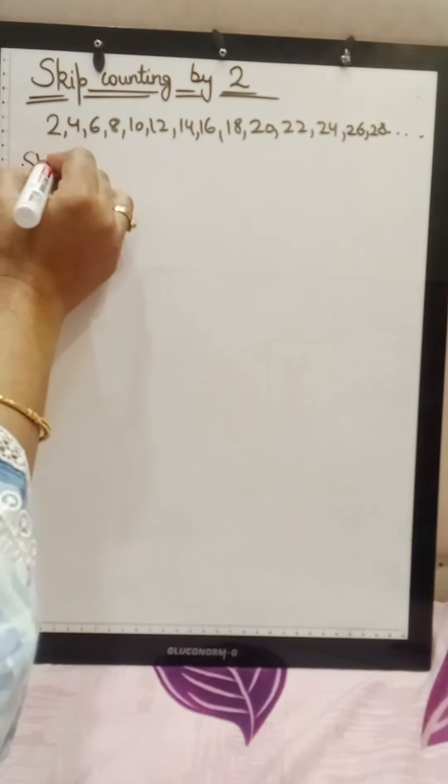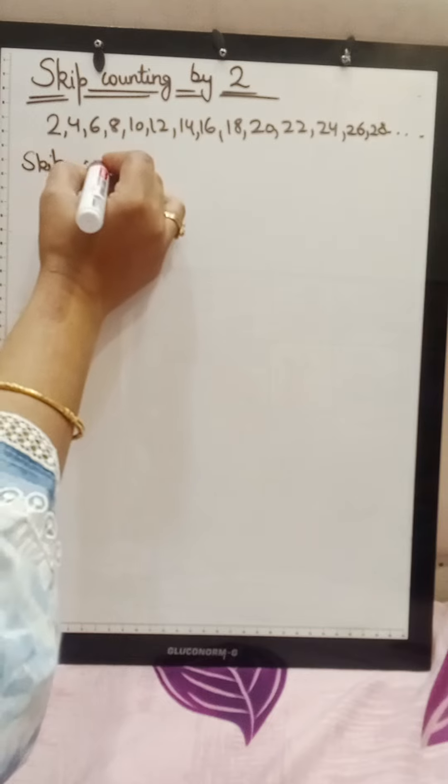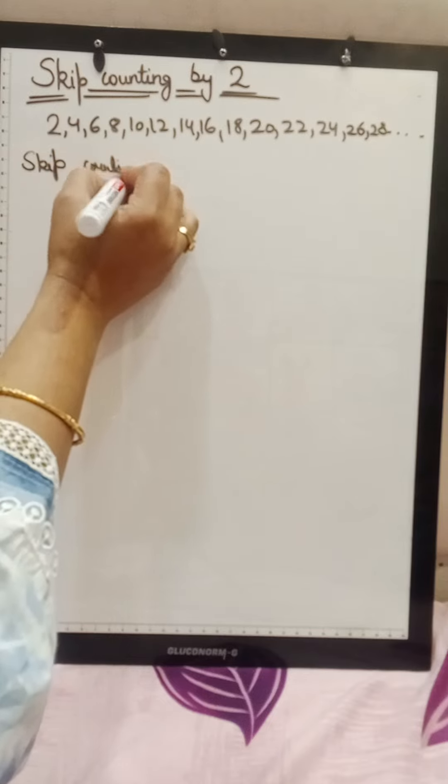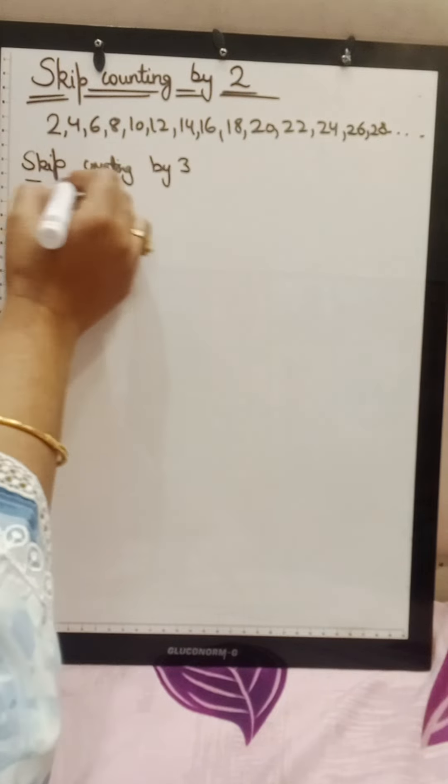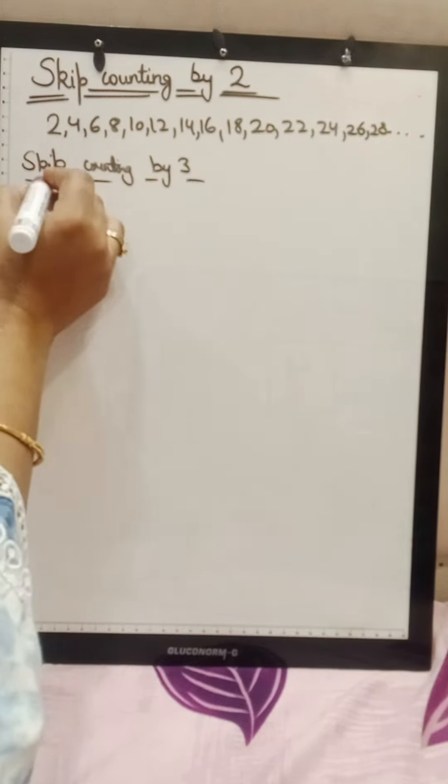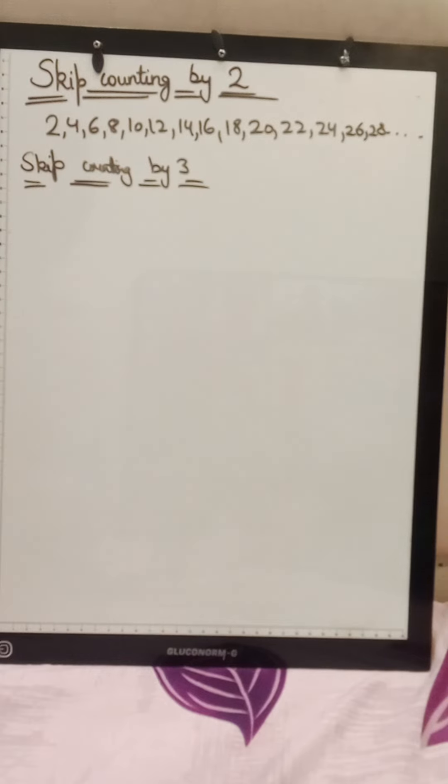Now we will see skip counting by 3. This is why I am telling you that you will learn the table and you will understand skip counting. If you are forgetting something in the table, then you can do this.